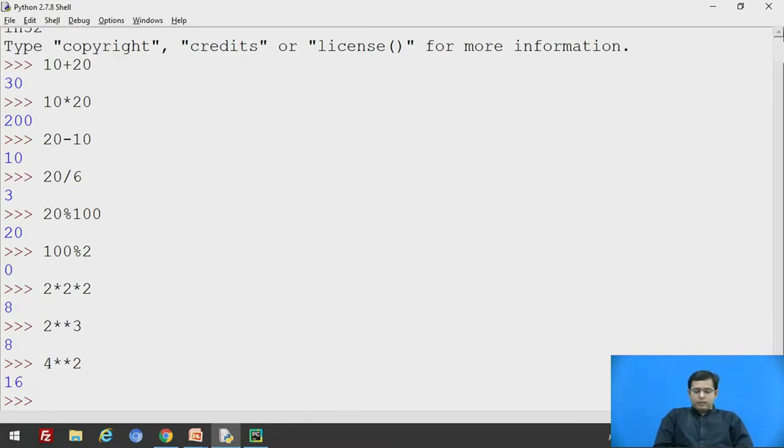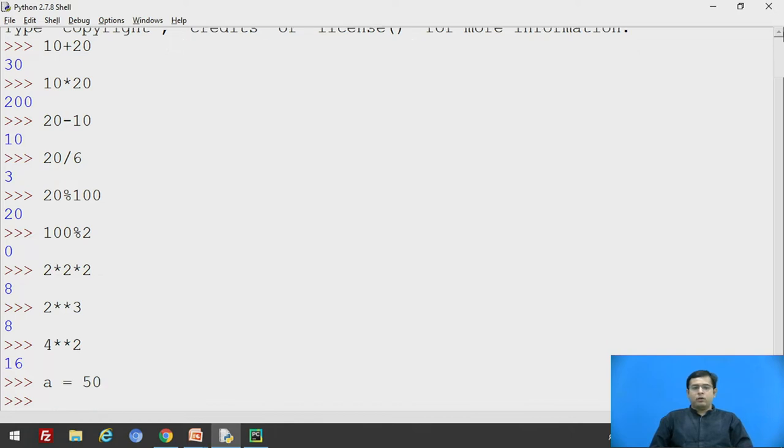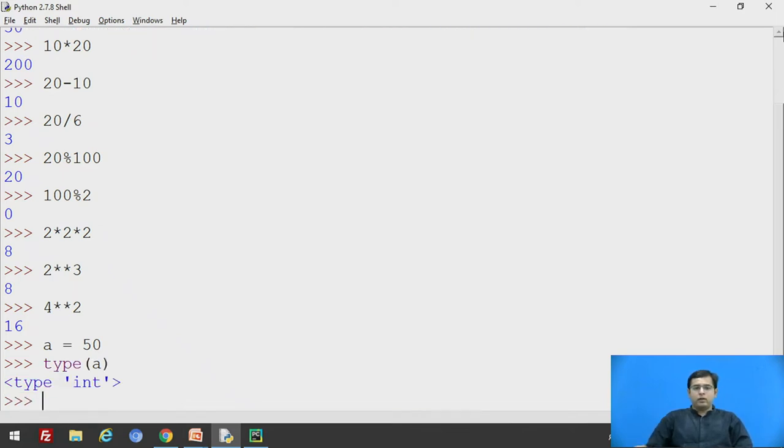As we say we do not need to specify any data type to a variable, we will say a is equals to 50. Now we will check the type of a, that is the function type and we will pass a in it. See, here it is giving the type of a is int.